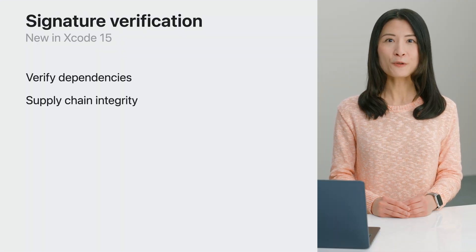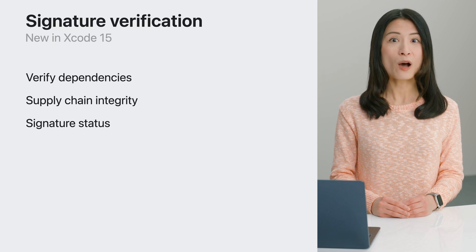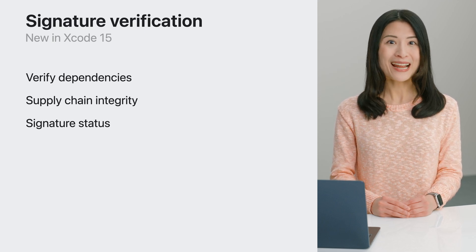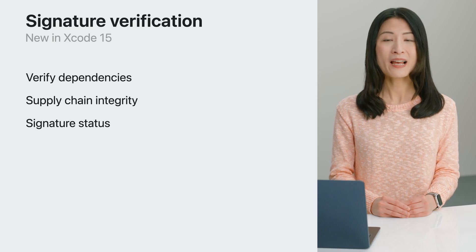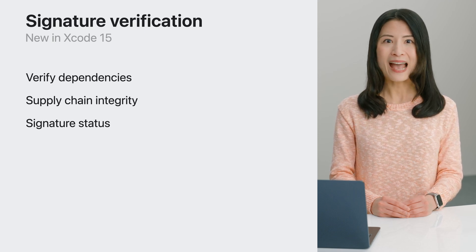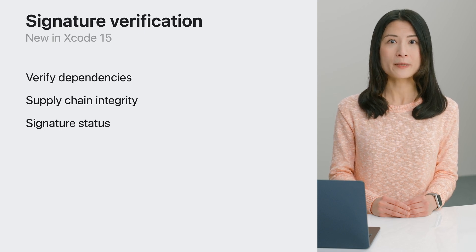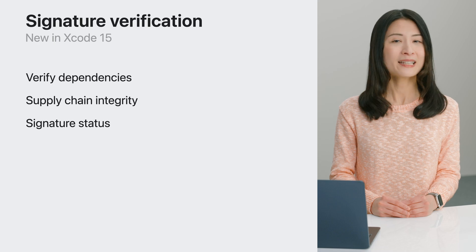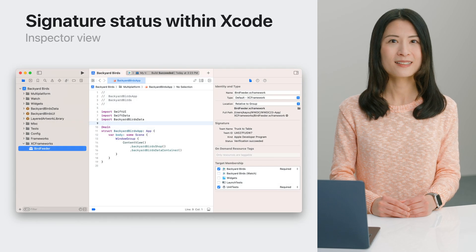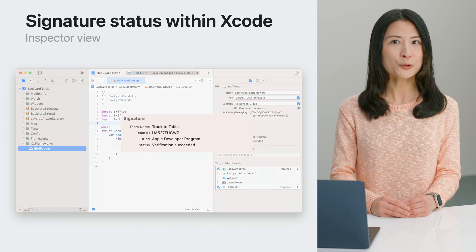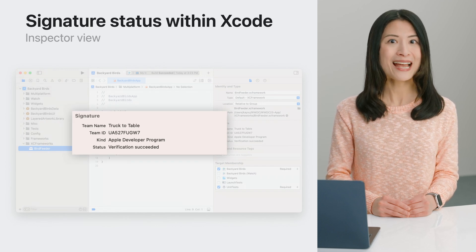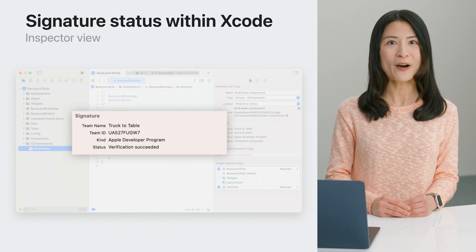Signature verification is the new feature in Xcode that automatically handles the verification of your app's dependencies and protects your supply chain integrity by alerting you if an issue is detected. Xcode 15 now has tools to help you automatically track the identities used to sign any XCFrameworks that you include in your project. Xcode now shows a new section in the inspector that displays the signature status for the XCFrameworks you include within your app.